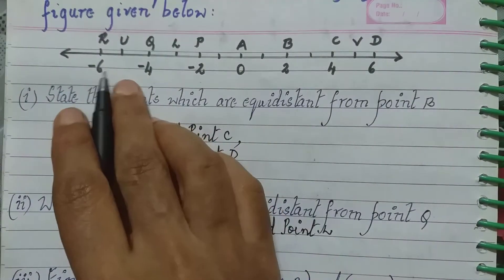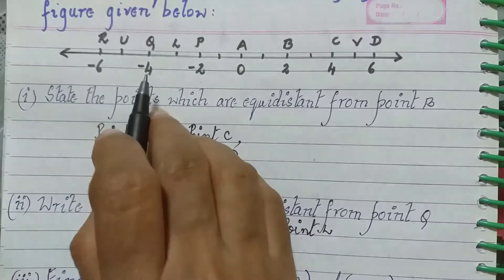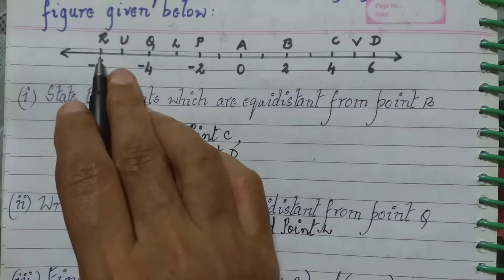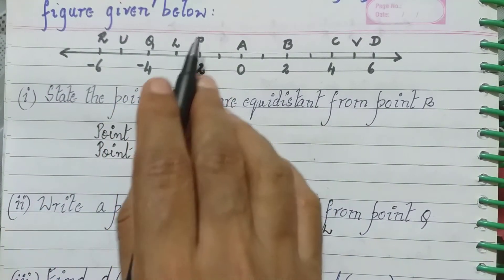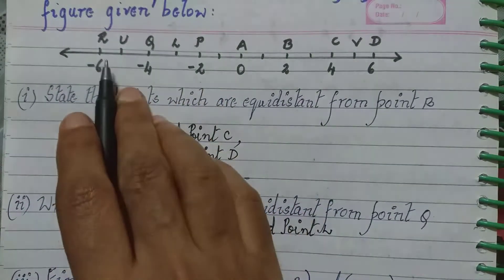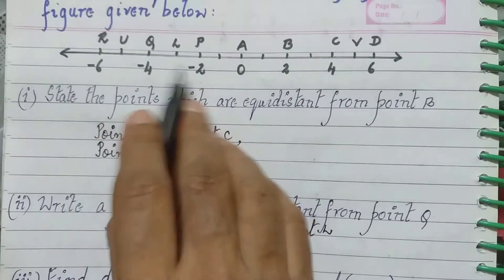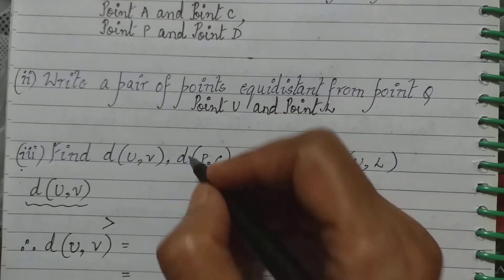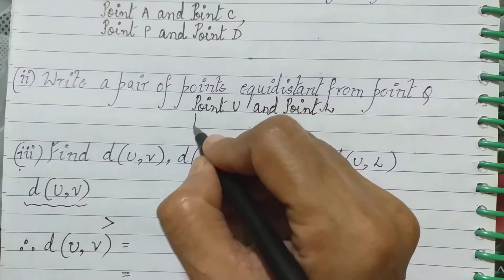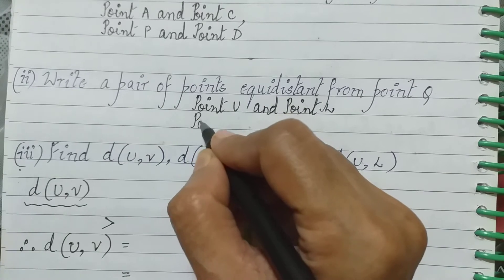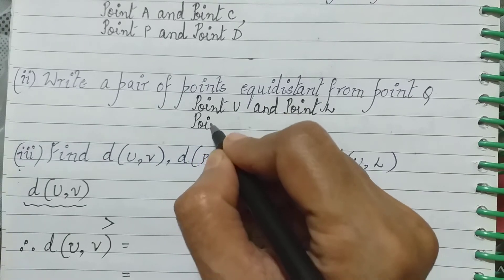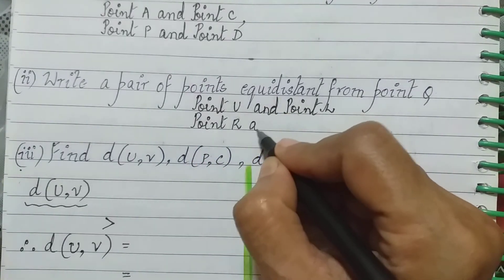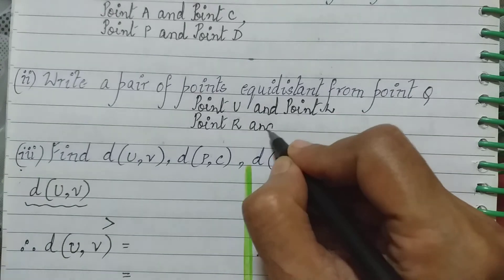If we look at two units on either side of Q, two units gives us point R on one side and point P on the other. So point R and point P are also equidistant from point Q.